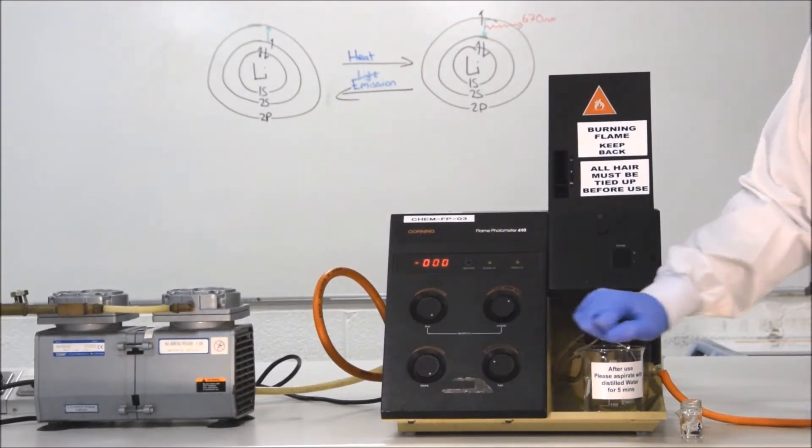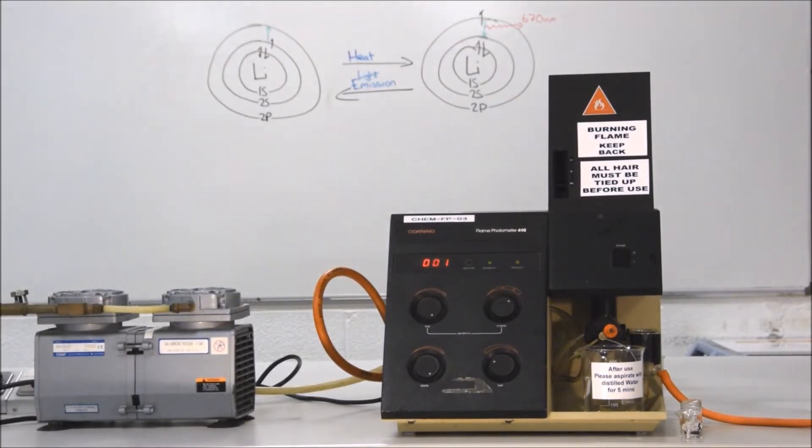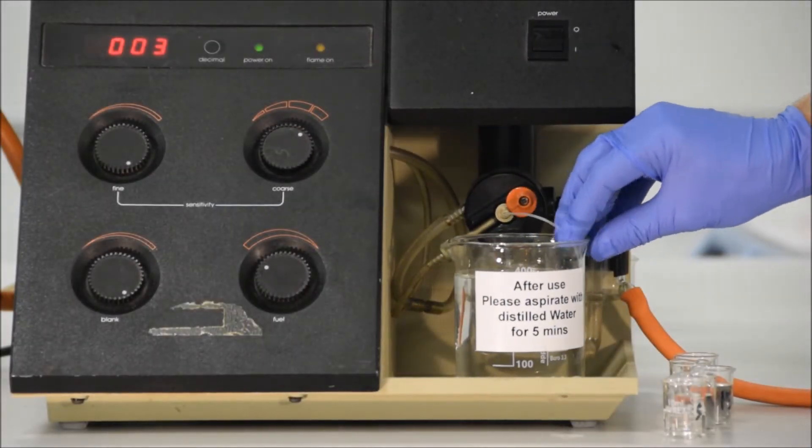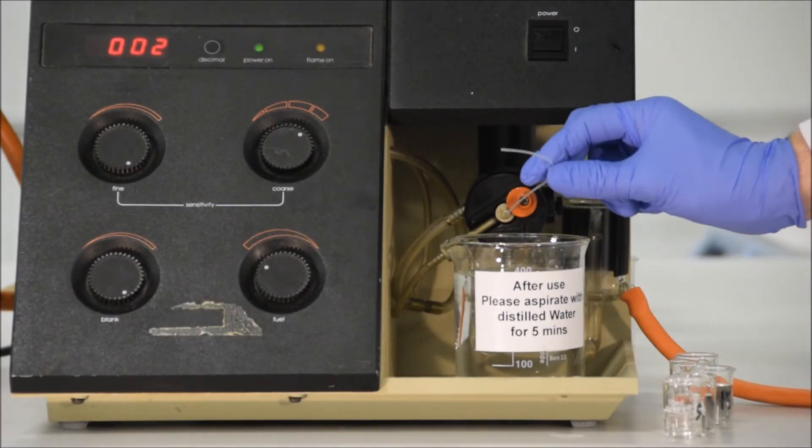At this point we want to zero the machine. The machine will drift, the zero value will change if we leave it on for a while due to changing conditions. When we're zeroing the machine, we make sure that distilled water is being taken into the aspirator.